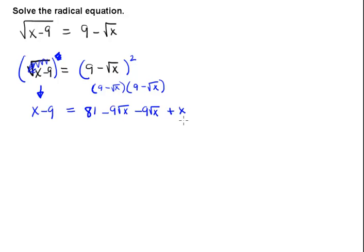Let's clean up the right hand side of this equation right now. These two terms here in the middle are alike, and I can add them together, which gives me 81 minus 18 square root of x plus x.